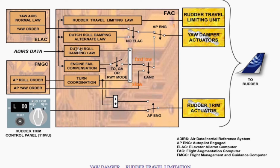When the auto-pilot is engaged, Dutch roll damping law is given by the Flight Augmentation Computer using the air data inertial reference system. Engine failure compensation is also given by the FAC using the air data inertial reference system in takeoff, go-around, or runway mode. Similarly, turn coordination computes the yaw order given by the Flight Augmentation Computer roll order.